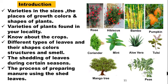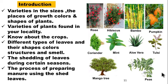For example, you can see in the picture children: rose plant, hibiscus, bamboo, pumpkin, coriander, mint, aloe vera, tulsi etc. But all these plants are not the same and don't look the same. They have different types of stem, roots, flowers. Some plants grow along the ground, some plants grow with support, and some plants are big in size.